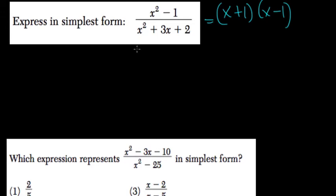I factored x squared into x, and I factored 1 into 1. So we get x plus 1 times x minus 1. And that'll help us cancel out in a moment.